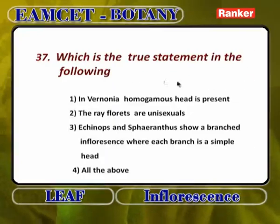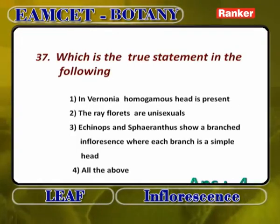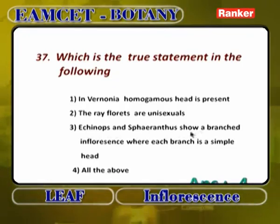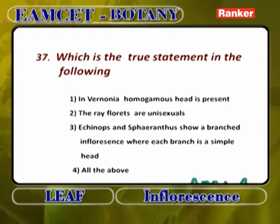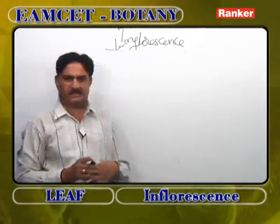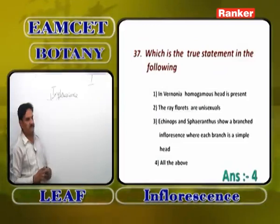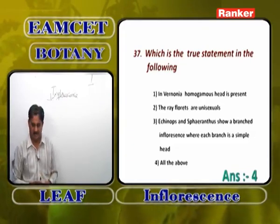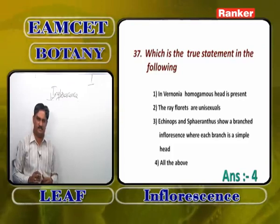Which is the true statement? In Vernonia, homogamous head is present — correct — with all disc florets. Ray florets are unisexual — correct — because only gynoecium is present, antheridium is completely absent. Echinops and Spheranthus show branched inflorescence where each branch ends with a simple head — correct — that is why they are compound head inflorescences. All the above statements are correct.